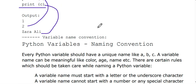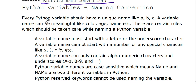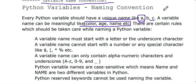Let's talk about the variable name convention. Every Python variable should have a unique name — A, B, C, whatever it is. But we prefer the variable name should be meaningful. For example, if I would like to store an age, I write age equal to 80. It is meaningful. It will be easier to understand when you look at the program later.